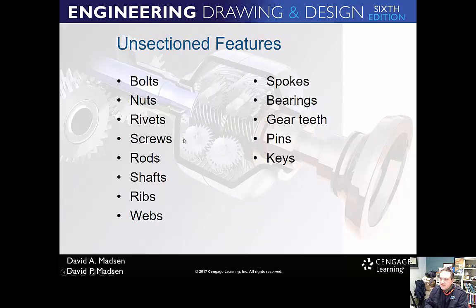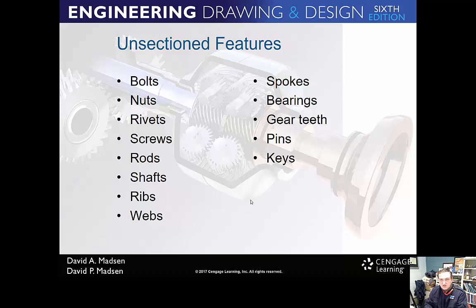Here are things you do not have to section: bolts, nuts, rivets, screws, rods, shafts, ribs, webs, spokes, bearings, gear teeth, pins, and keys. For example, if you have a wheel with a spoke and need to see its cross section, you use a revolved section for that — which we'll cover in a minute. In general, spokes are not shown in a full section.